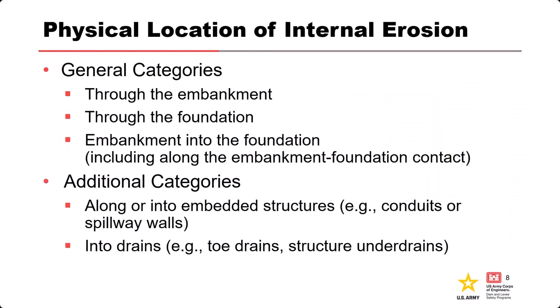Organizing case histories by the location of the internal erosion pathway is useful for evaluating historical failures and incidents — it gives us an understanding of failure rates and helps us communicate these things. These are typically organized by three categories or physical locations: through the embankment, through the foundation, and from the embankment into the foundation, which also includes the embankment-foundation contact. Others include along or into embedded structures such as conduits, spillway walls — something continuous from upstream to downstream across the embankment — and into drains. These categories are part of a potential failure mode description.